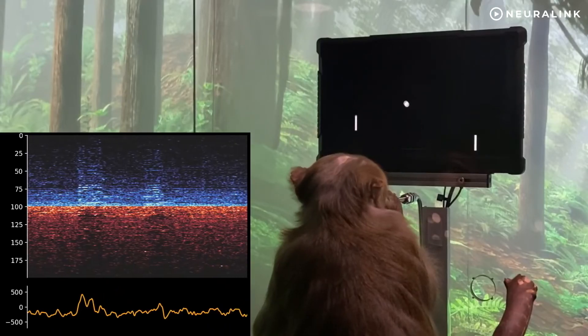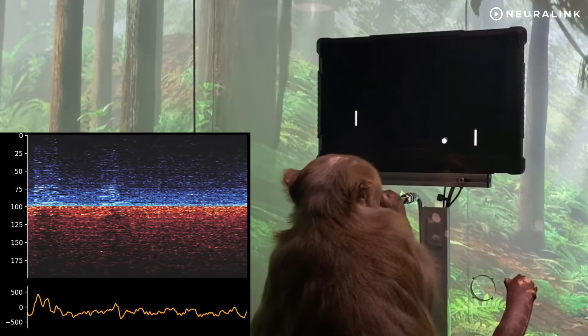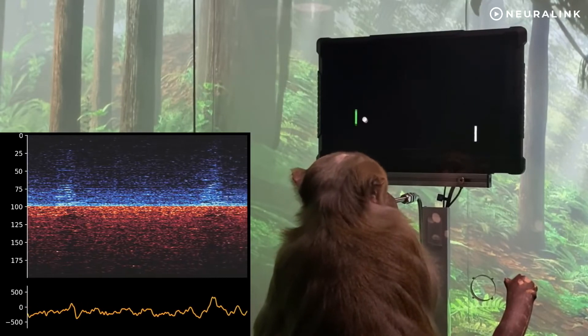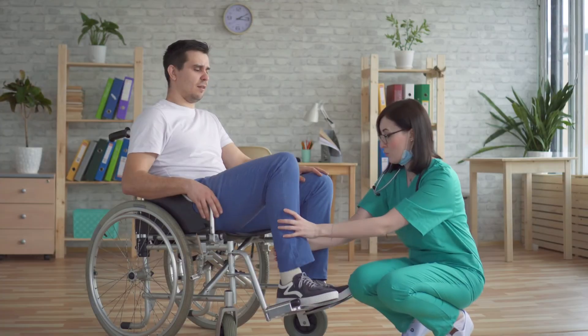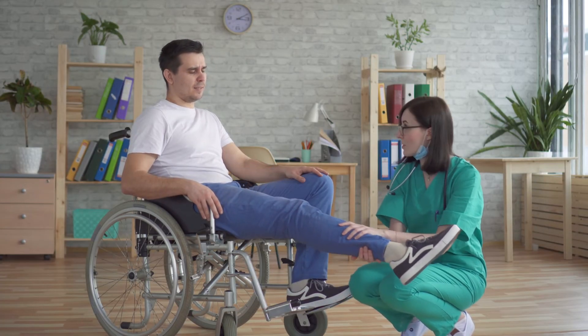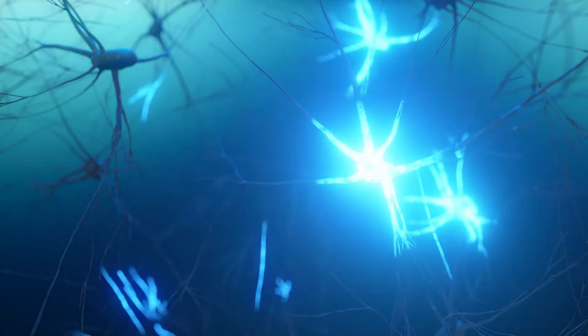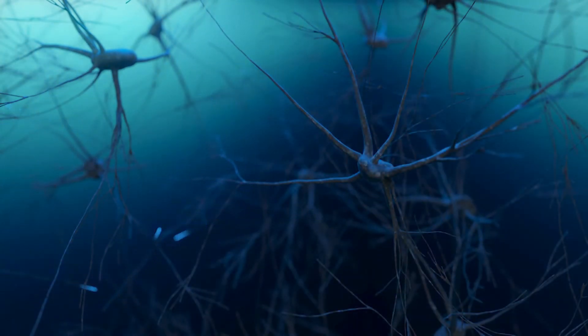From the technology demonstrated with the monkey, the company has said that Neuralink might let a paralyzed person tweet faster than a person using their thumbs on a smartphone. Also, the technology might help people with paraplegia walk again by sending signals from Neuralinks in the brain to Neuralinks in major body neural clusters.